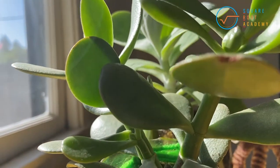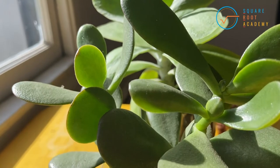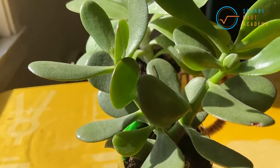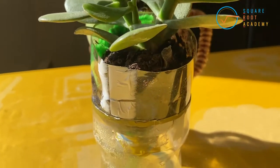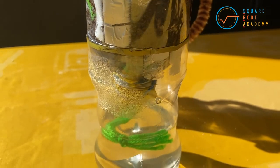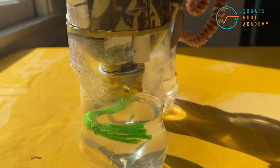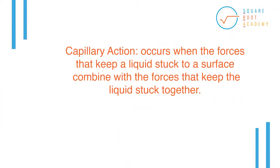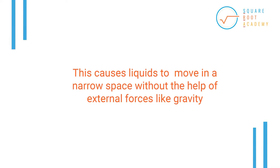Plants need soil, water, and sunlight to grow. As the soil dries it will soak up the water from the bottom of the planter through the yarn. This is known as capillary action, which occurs when the forces that keep a liquid stuck to a surface combine with the forces that keep the liquid stuck together. This causes liquids to move in a narrow space without the help of external forces like gravity.